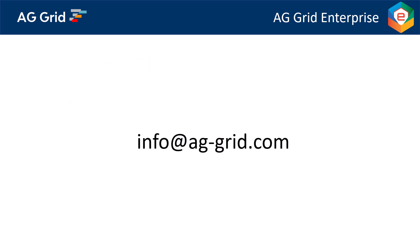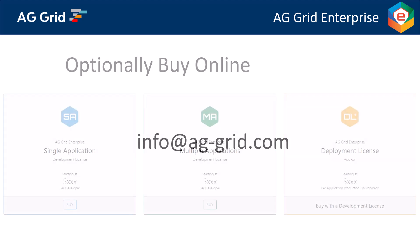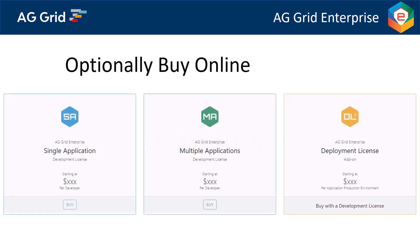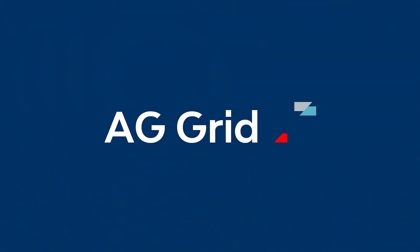That brings us to the end of explaining the AG Grid Enterprise license. If you have more questions on our license, please email info@ag-grid.com and we will help. If you are ready to buy, that's also done via the same email address, info@ag-grid.com, or you can go to our online portal and use that with a credit card. Simply visit ag-grid.com, go to our pricing page and click on buy. And that is the end of this video — thank you for watching.